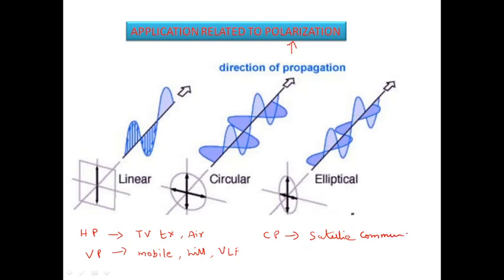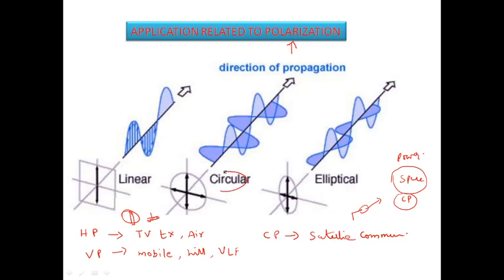For circular polarization, all satellite-related communication applications use this type. For example, when you expect a signal from a ground station towards space, it is very difficult to control the polarization orientation. By using circularly polarized antennas, we can maximize the power receiving capability. With linearly polarized antennas, maximum power transmission cannot be guaranteed since they are fixed in orientation. Because the field component rotates continuously in circular polarization, space-related applications prefer it, and the helical antenna is a famous example designed especially for this purpose.